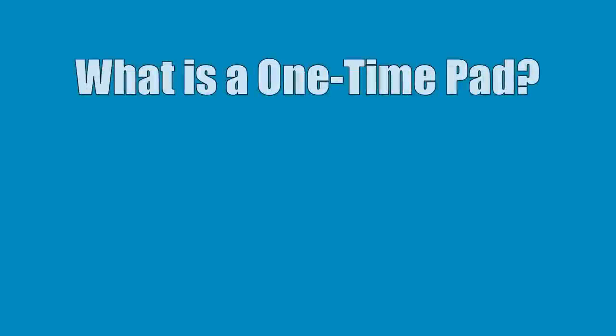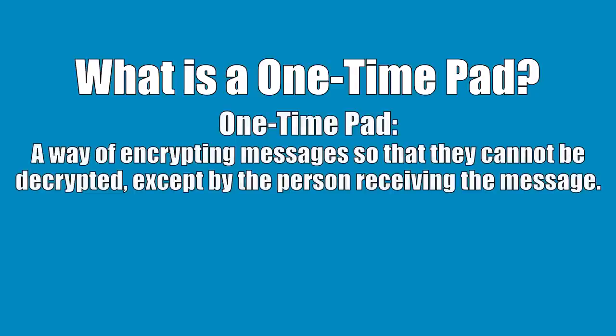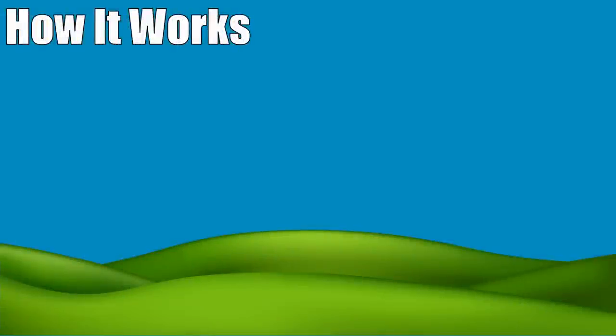We're going to start simple with the one-time pad. In short, a one-time pad is a way of encrypting messages so that they cannot be decrypted except by the person receiving the message. It is one of the most secure ways to encrypt a message because mathematically the one-time pad is impossible to break.